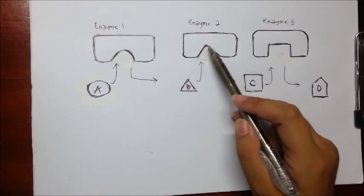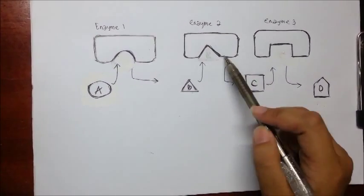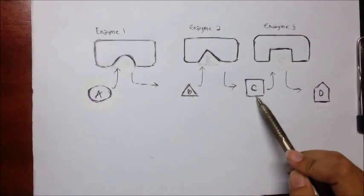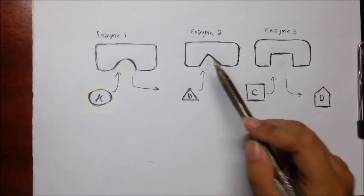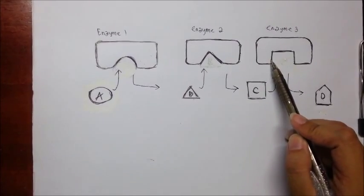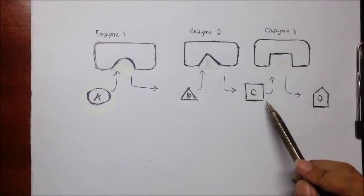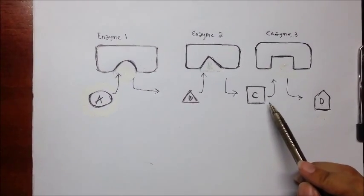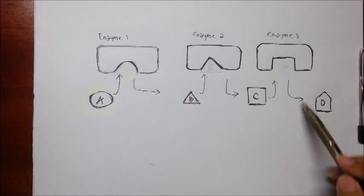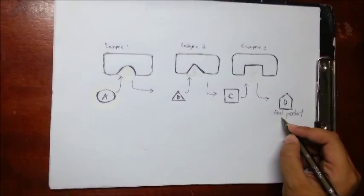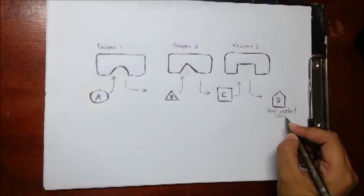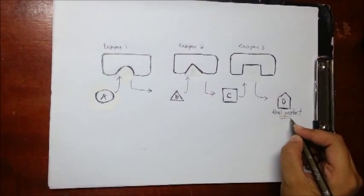B interacts with enzyme 2 to convert into product C. Product C likewise is the substrate for enzyme 3. After going through the chemical reaction, C is converted into D, which is our final product by enzyme 3.